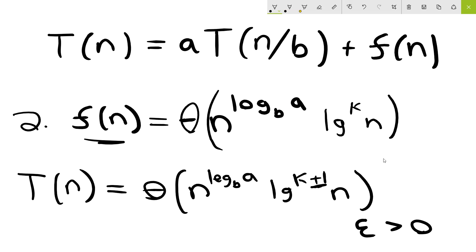So all we're doing to get our asymptotic runtime in case number two is we're multiplying by an additional factor of log n to give us a final asymptotic runtime of n to the log base b of a times log to the k plus one n. So whatever this k was plus one.